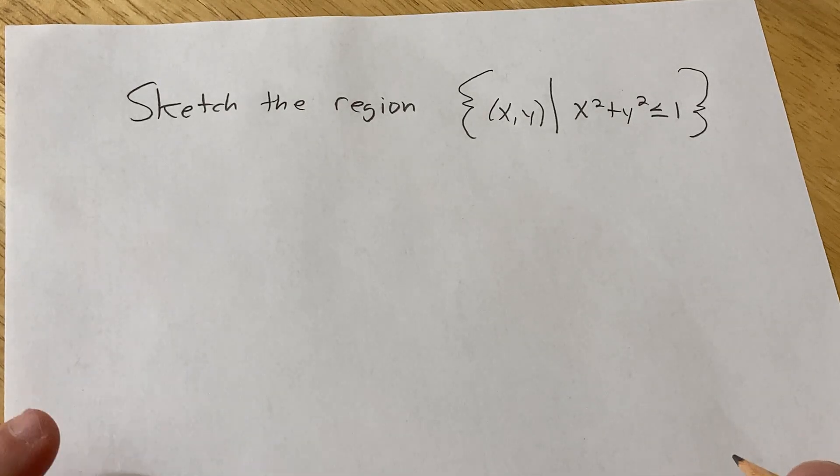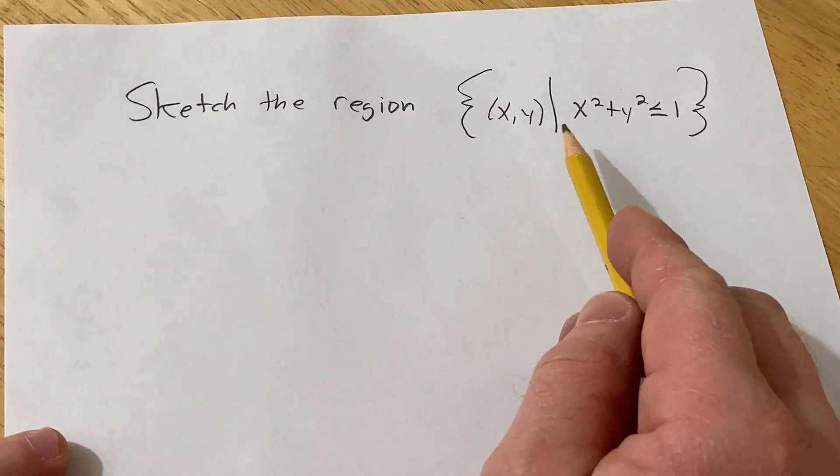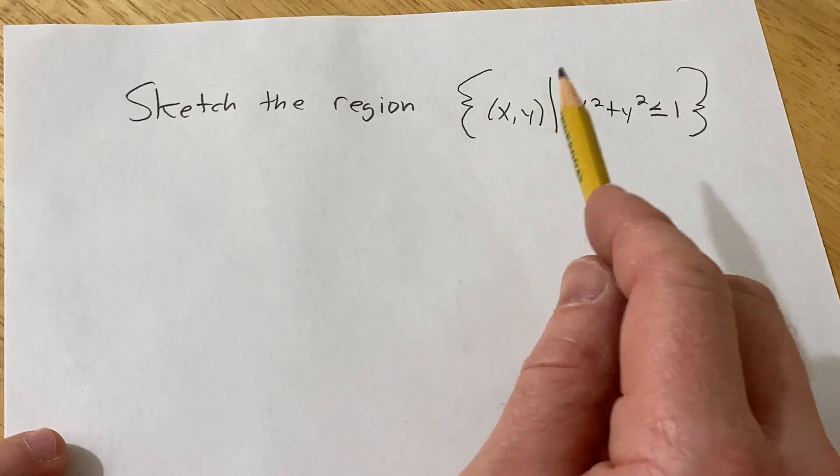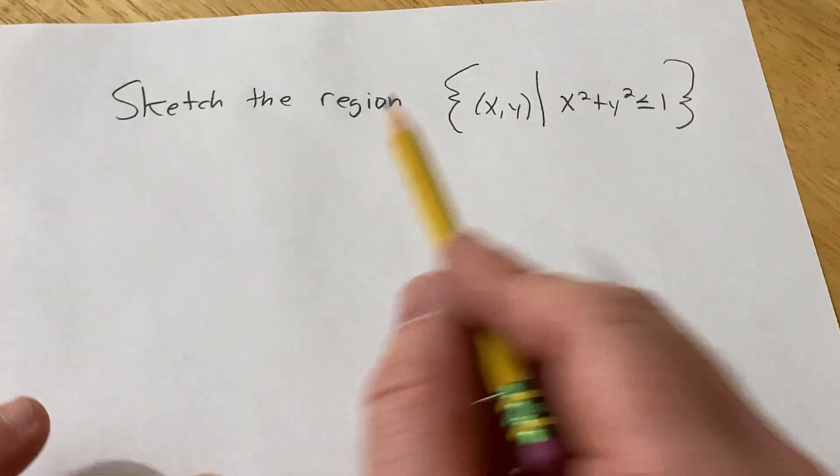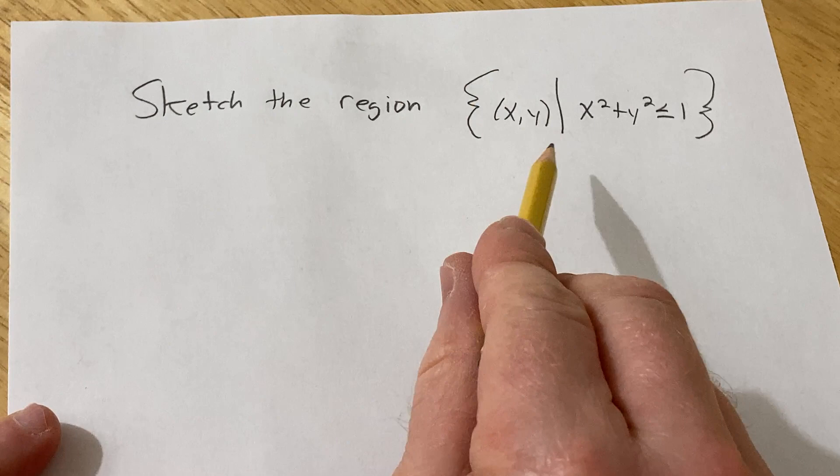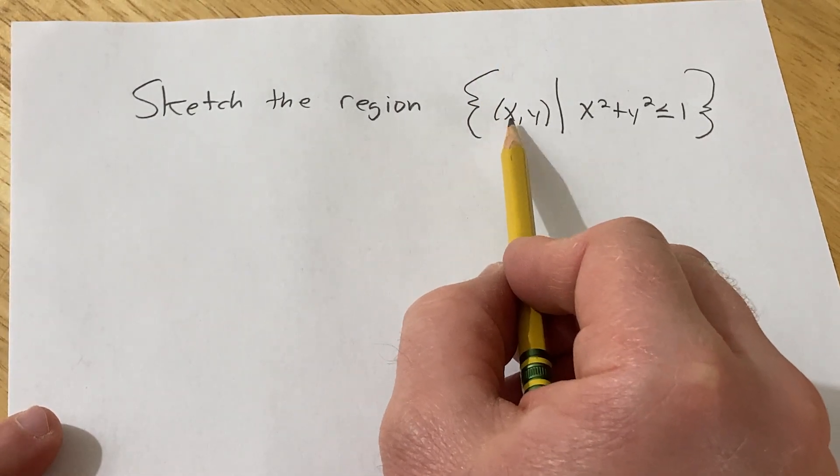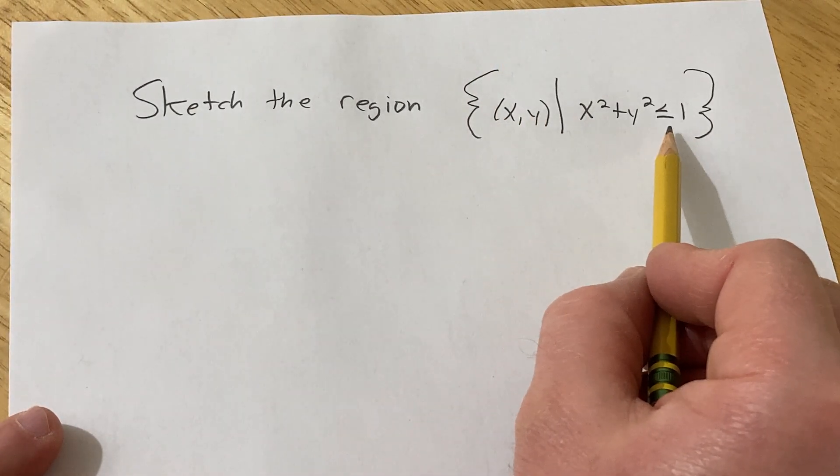Hello, in this problem we are going to sketch the region given by this set. This is actually a very important set and we're going to talk about what it is once we have the answer. So this is the set of all ordered pairs such that x squared plus y squared is less than or equal to 1.